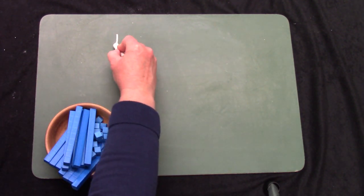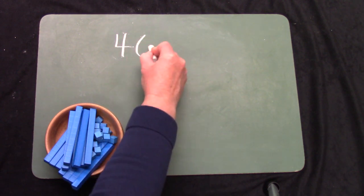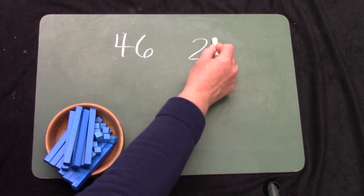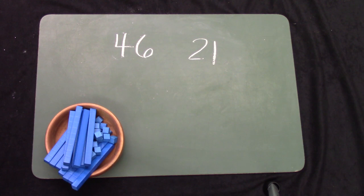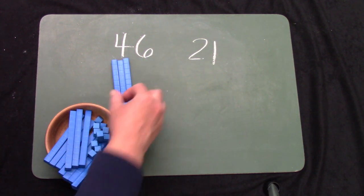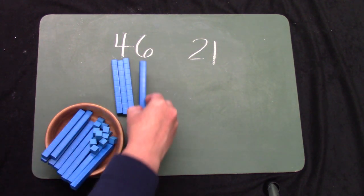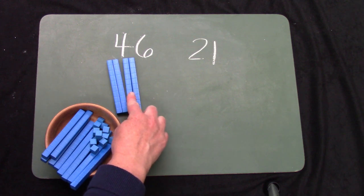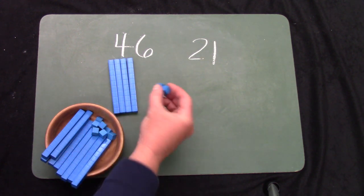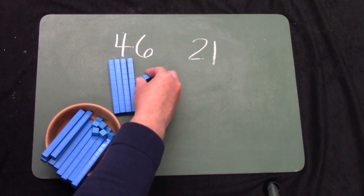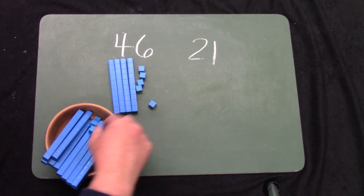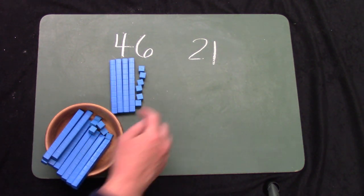What about the numbers 46 and 21? If we were to make 46, we would need 4 groups of 10. 10, 20, 30, 40. And then 6 little ones. 1, 2, 3, 4, 5, 6. 46.